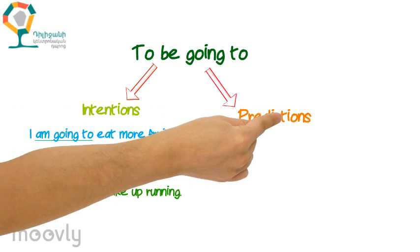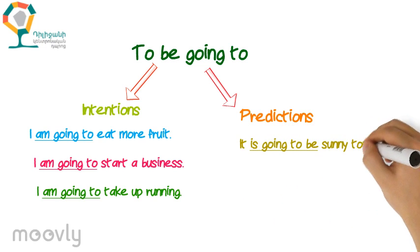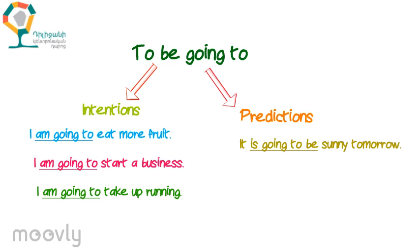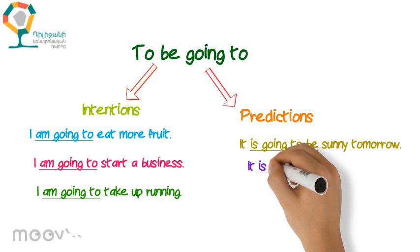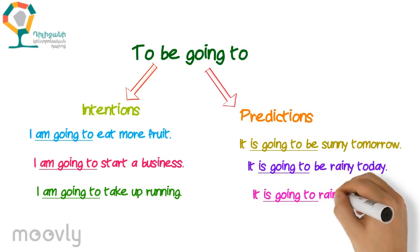The second case when 'to be going to' is used is prediction — when you say what will happen in the future based on what you know or what you can see. For example, you look at the sky and see no clouds, so you make a prediction: 'It is going to be sunny tomorrow.' Or you look at the sky and see a lot of clouds, and you make another prediction: 'It is going to be rainy today' or 'It is going to rain today.'